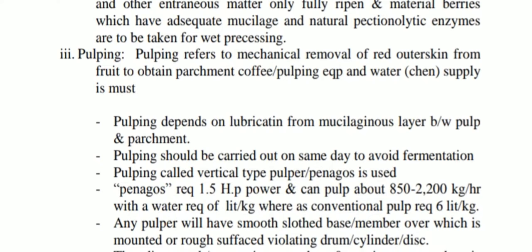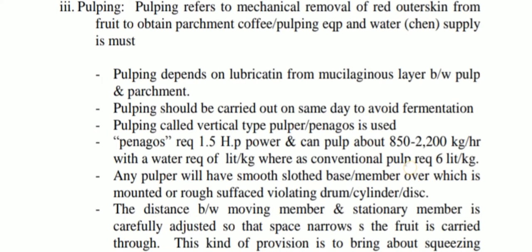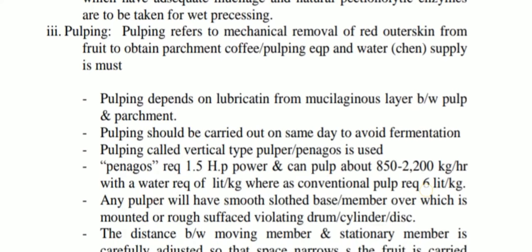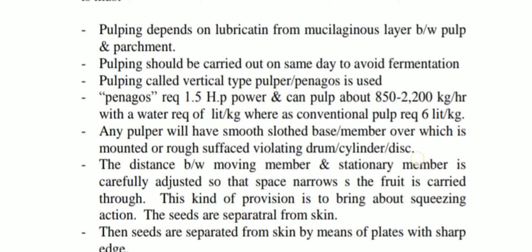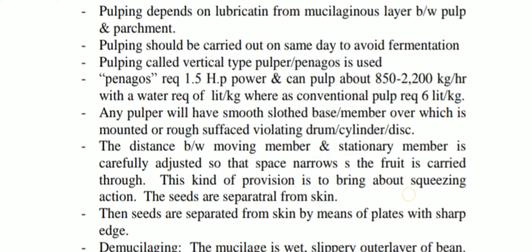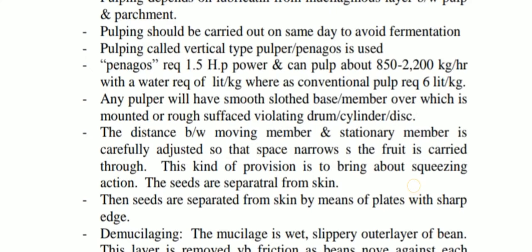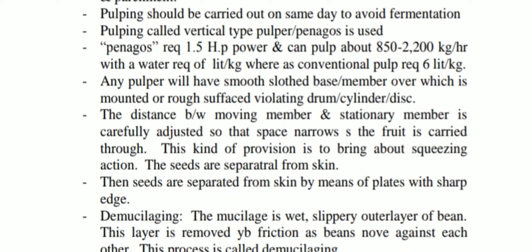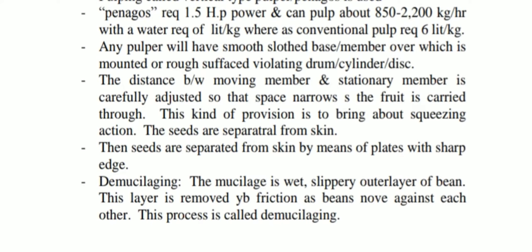Then pulping is done. Pulping refers to the mechanical removal of the red outer skin from the fruit to obtain parchment coffee. Pulp can initiate fermentation, so the pulp should be removed promptly. The specifications of pulpers are dependent on the species requirement and the standard of the factory or brand.